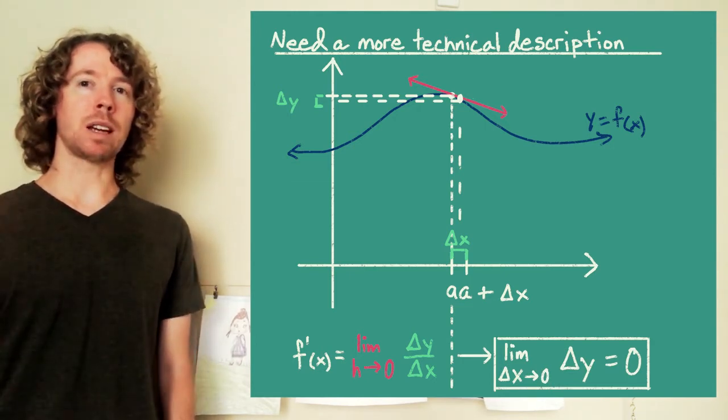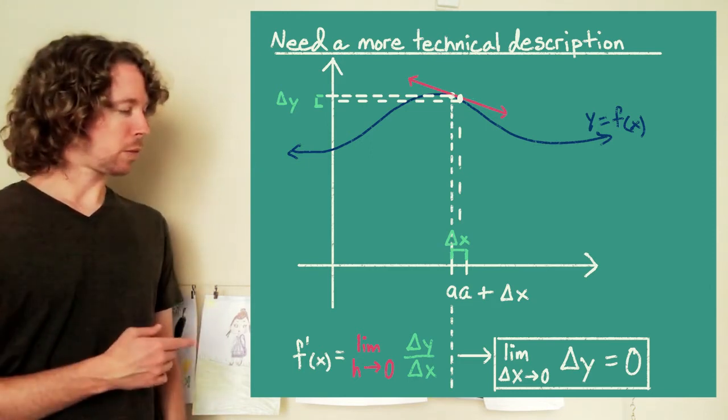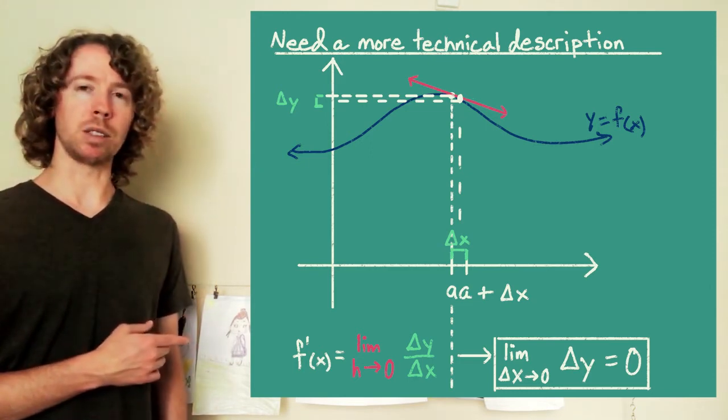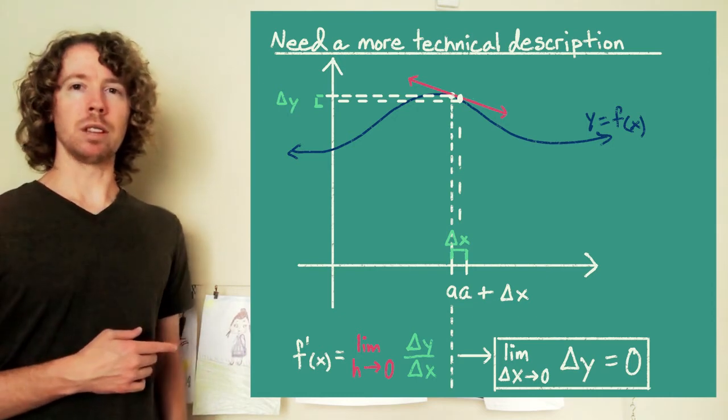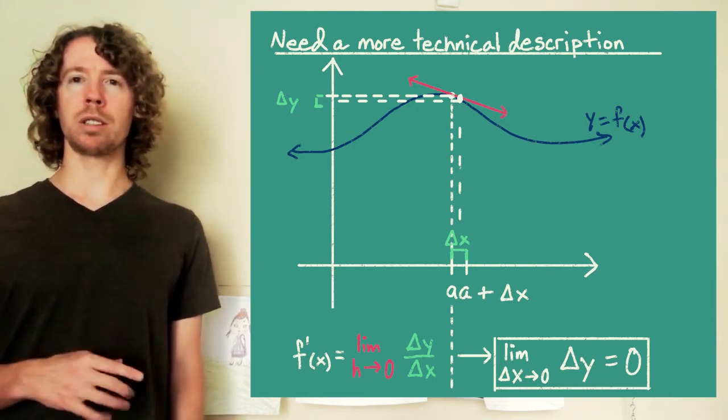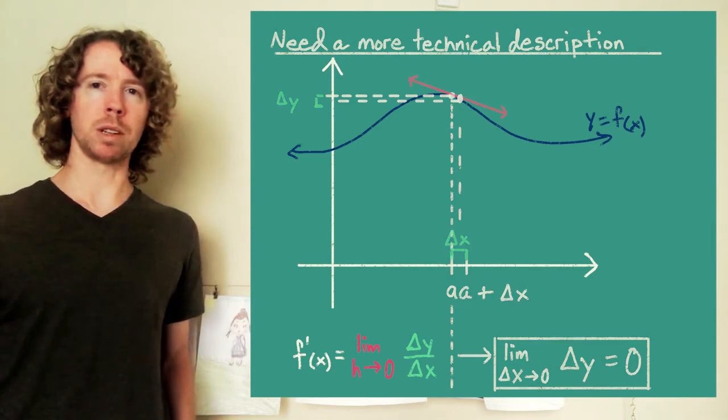So that's going to be a condition for continuity, for our function being continuous at x equals a. Now let's look at the other two pictures real quick, just to make sure that this idea still works with those two pictures.